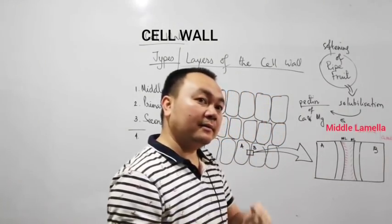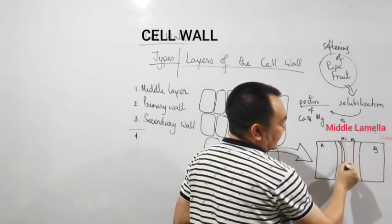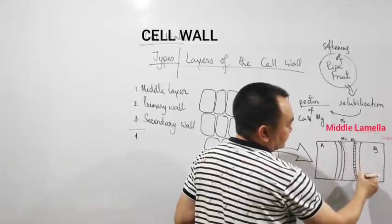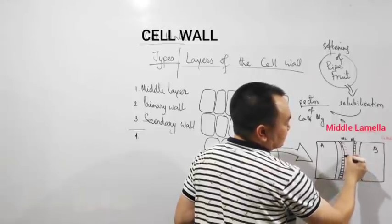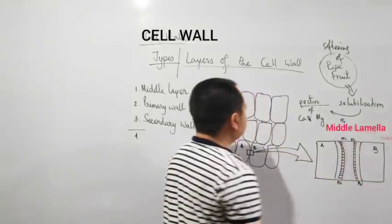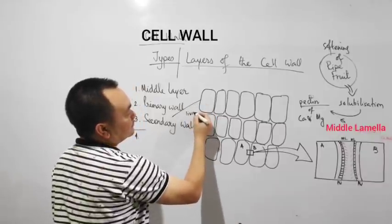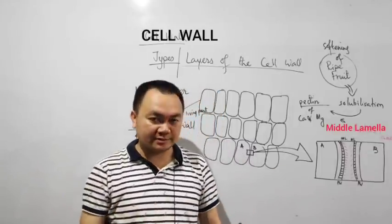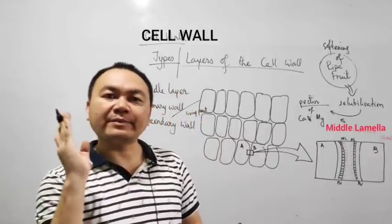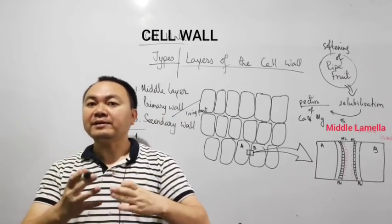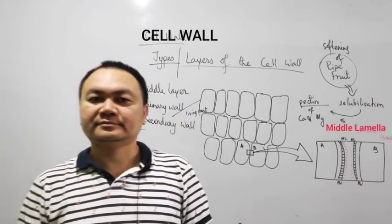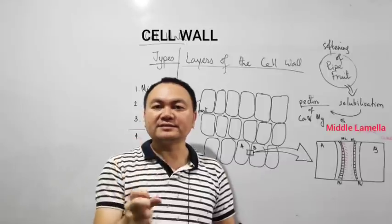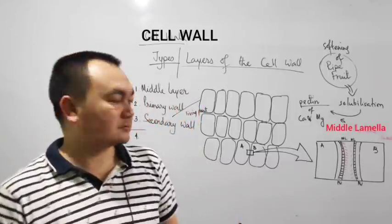The next one is the primary wall. Primary wall of cell A and primary wall of cell B is the black part. It is the living part. This is the primary wall. Now, if any growth happens, it is due to an increase in the number of cells. It is capable of growth and it gradually diminishes as the cell matures. So when a cell gets matured, the primary wall will get diminished or will not be seen anymore.